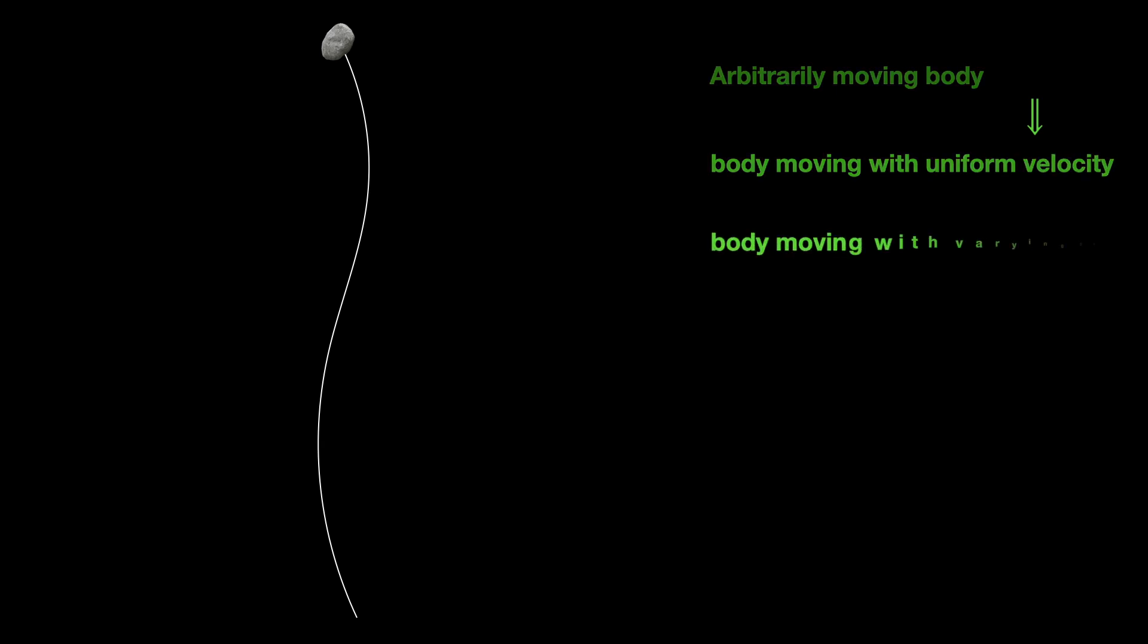Let us consider the trajectory or world line of an arbitrarily moving particle. By arbitrarily moving, we of course mean its motion can be uniform or non-uniform or a combination of both. Since the particle is a material body, so its speed at all points on its trajectory is less than the speed of light and therefore tangents drawn at any point of the world line must lie within the light cone at that point. So, world line of the particle is a timelike curve and all infinitesimal segments of the world line are timelike intervals.